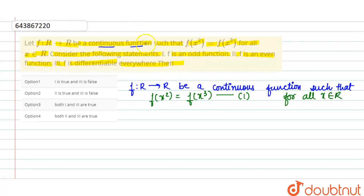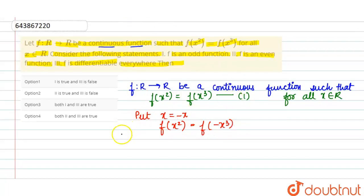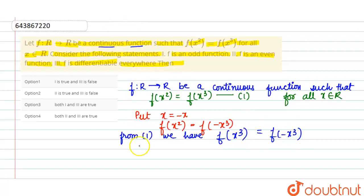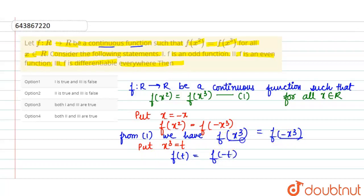अब हम इसको solve करने के लिए x की जगह minus x put करते हैं। Minus x put करने पे x² positive रहेगा, लेकिन (-x)³ = -x³ आएगा क्योंकि odd power में negative रहता है। तो from equation 1 we have: f(x³) = f(-x³). अब x³ की जगह t put करें — f(t) = f(-t).